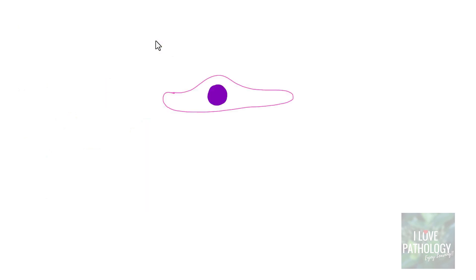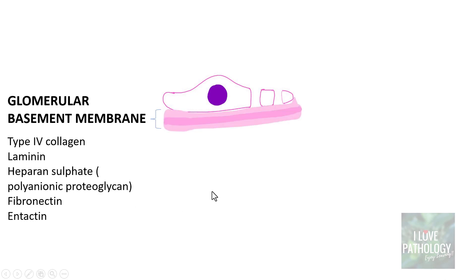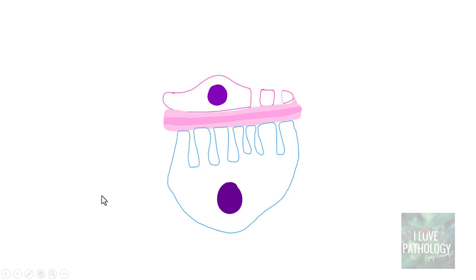Let's look into more details about the histology of glomeruli. The glomerular capillaries are lined by endothelium and this endothelium is fenestrated. Beneath the endothelium is the glomerular basement membrane. This basement membrane is composed of type 4 collagen, laminin, heparan sulfate — which is basically a polyanionic proteoglycan — and it also has fibronectin intact.